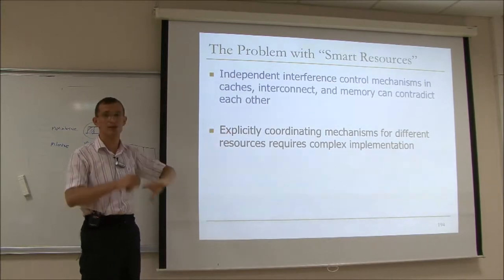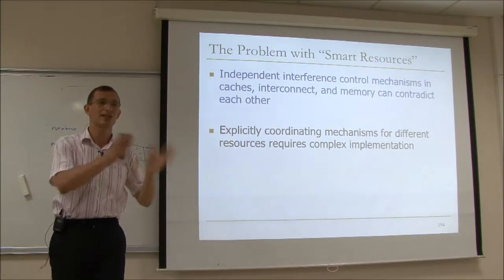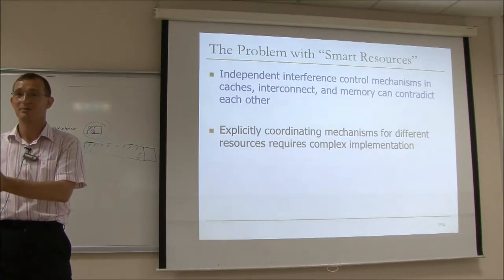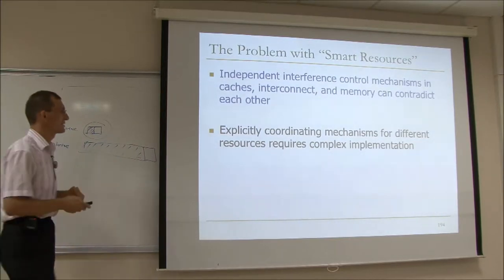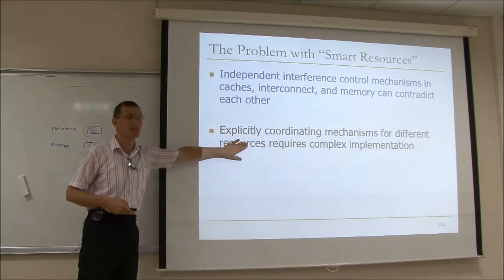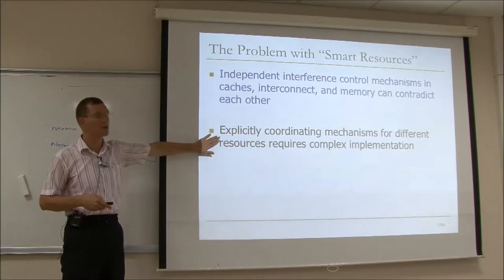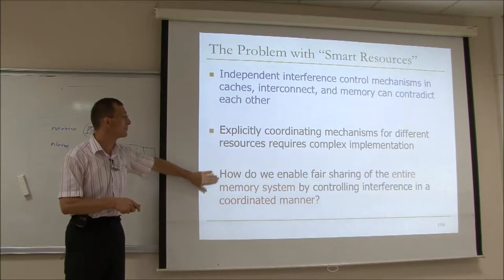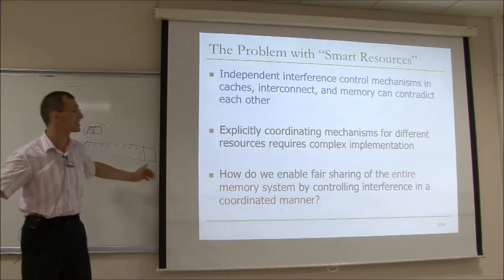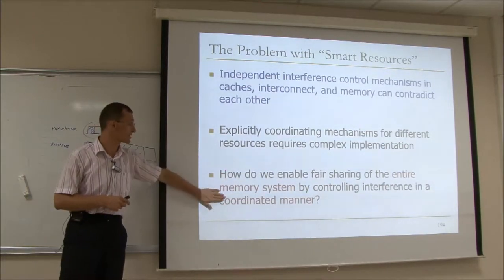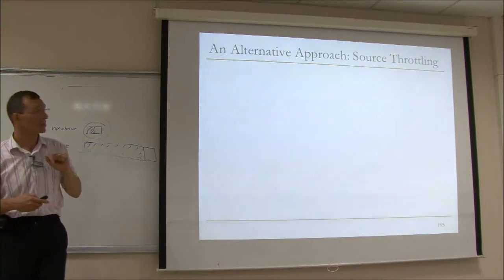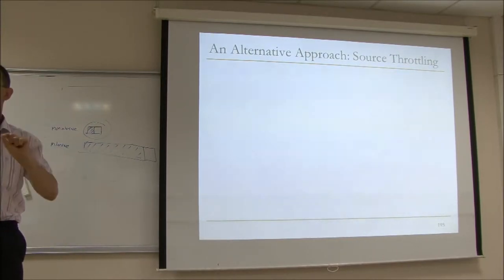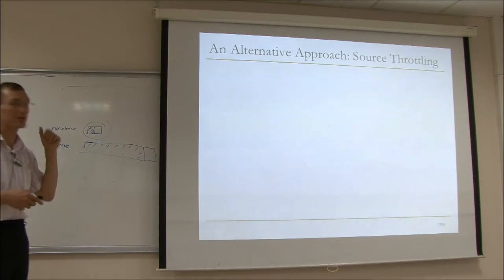People have actually studied this problem. They need to allocate enough cache space, memory bandwidth, and interconnect bandwidth at the same time, and those techniques have complex implementations. The key question is: how do we enable fair sharing of this entire memory system by controlling interference in a coordinated manner? An alternative approach to designing each resource to be smart is to do source throttling.